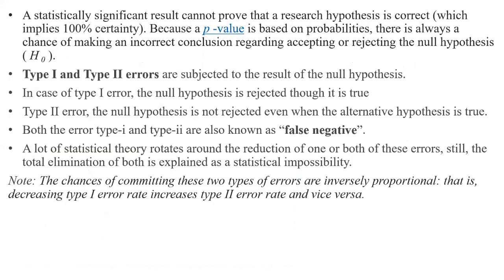Type 1 and Type 2 errors. A statistically significant result cannot prove that a research hypothesis is correct with 100% certainty. A statistically significant result means the p-value is less than 0.05, but that doesn't mean the research hypothesis is correct, because the p-value is based on probability. There will always be a chance that an incorrect conclusion will come regarding accepting or rejecting the null hypothesis. Type 1 and Type 2 errors are related to the result of the null hypothesis.